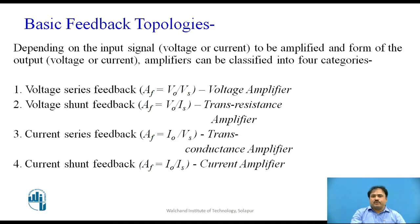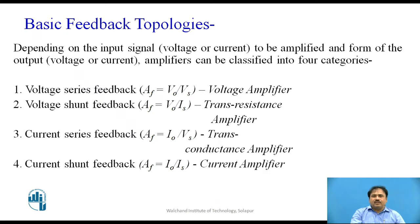Different types of feedback configurations are possible, normally called feedback topologies. A topology is the mechanism by which we connect different components. There are four main types, depending on the input signal and the output signal — that is, the way we feedback the output signal back to the input gives us different types of topologies. One is called voltage series feedback.